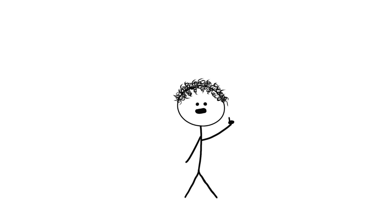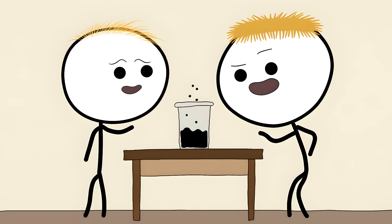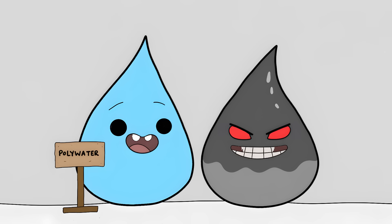Number one, the water that wasn't. Imagine discovering a new type of water that could turn normal water into thick goo just by touching it. That's exactly what Soviet scientists thought they found back in the 1960s. They called it polywater. And it was basically water's evil twin.